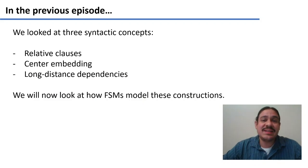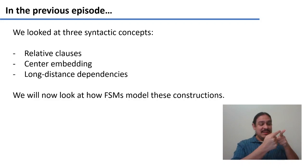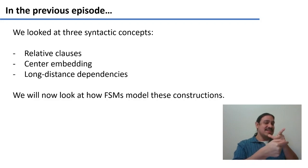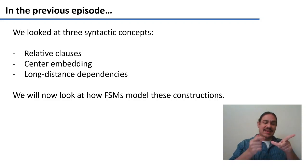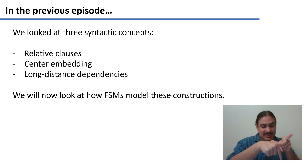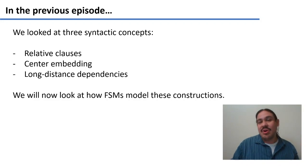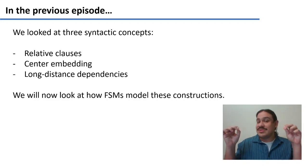In the last video, we looked at three syntactic concepts. Relative clauses, which are sentences nested within sentences — for example, 'I ate the pizza that has cheese,' where there's a main clause 'I ate the pizza' and a relative clause 'that has cheese.' We have the concept of center embedding, which is a relative clause that falls somewhere in the middle of a main clause — for example, 'the pizza that I ate is delicious.' We also have long-distance dependencies, which are relationships between words or structures that are far apart.